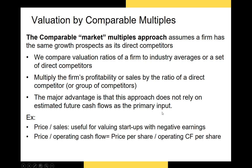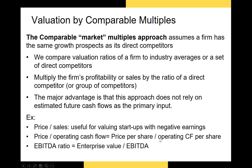Another ratio is the price-to-operating cash flow ratio — that's market price per share divided by operating cash flow from the statement of cash flows. Of all these metrics, this is probably the one I've found to be most accurate in predicting future returns or future alpha of a stock.